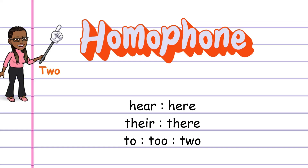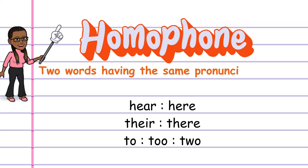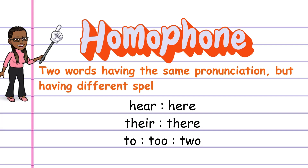A homophone refers to two words having the same pronunciation but different spellings and meanings. For example, "here" and "hear," "there" and "their," and "two," "to," and "too."